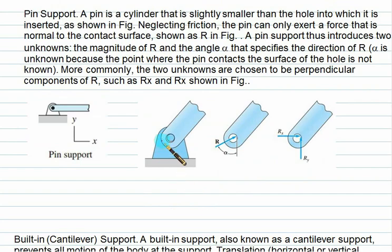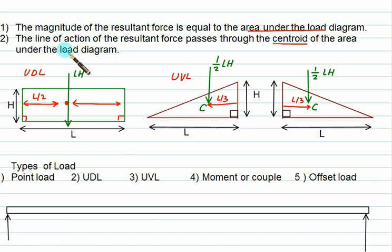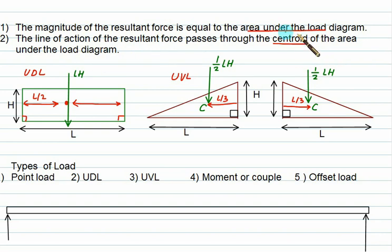The other type of support is a pin support. A pin support allows no translation about the x-axis or y-axis but gives permission only for rotation. So we have two reactions in the case of pin support. For UDL and UVL loads, the magnitude of the resultant force equals the area of the load diagram, and the line of action always passes through the centroid. For a rectangle the centroid is at L/2 from the 90-degree end, and for a triangle it is at L/3 from the 90-degree end.